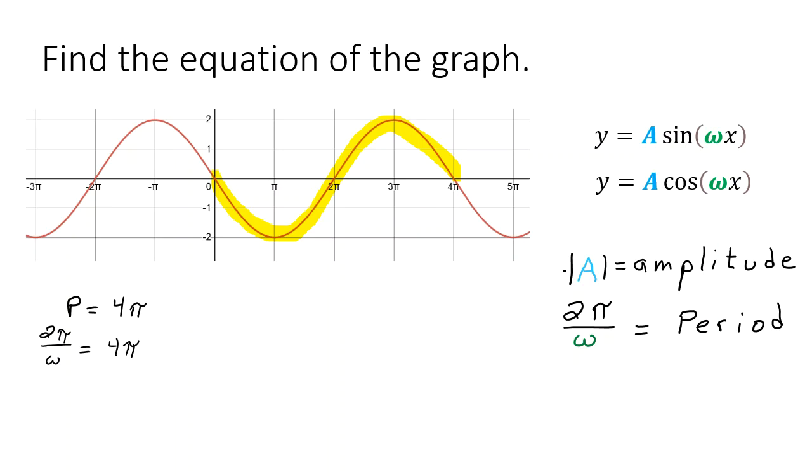All right we could do a little fancy cross multiplication here and so we'll end up with two pi over four pi. If you multiply both sides by omega and then divide by four pi you're going to end up with this and so then omega is equal to a half. Okay great so we're going to end up plugging that into our equation where omega is.